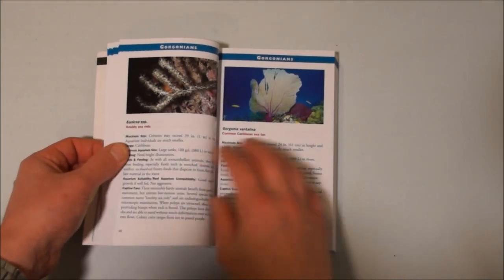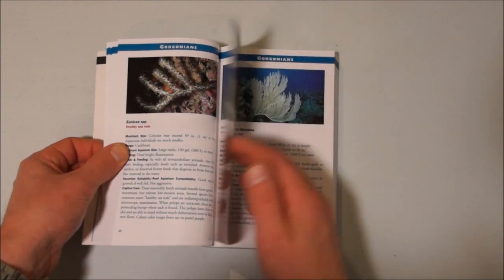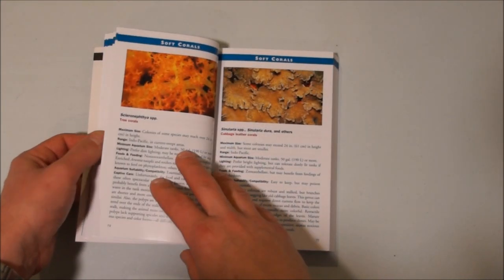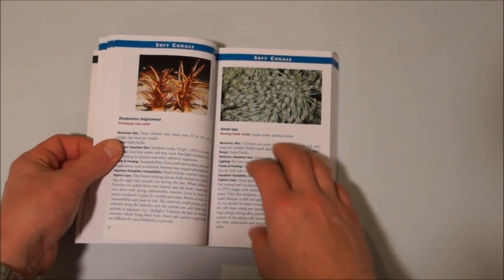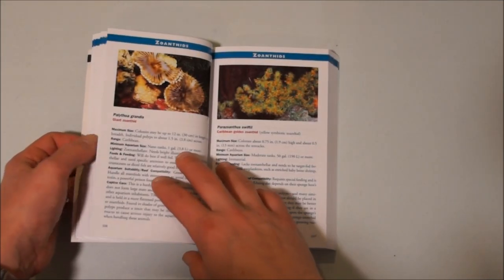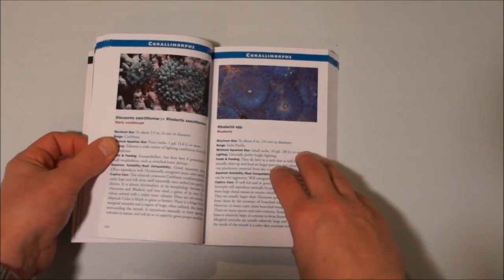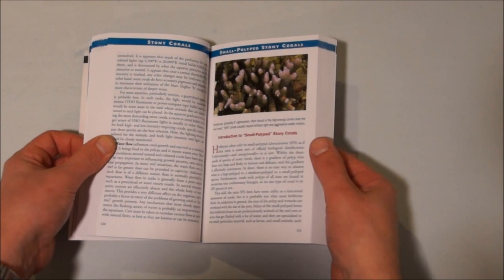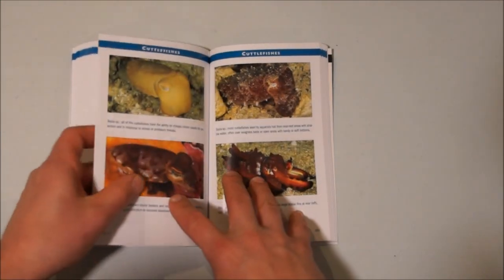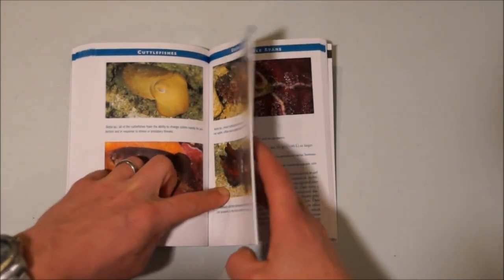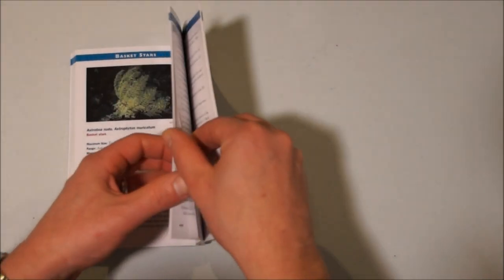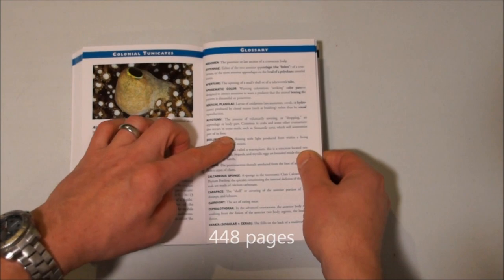It's one of these books that kind of does a little chapter summary on each of the families and then it goes into the specifics of each of the types. High gloss pictures, good resolution. Each thing tells you the common name, the scientific name, its size, its range, its minimum aquarium, its lighting. It tells you a little bit about how to feed it and its captive care. I think there's about 500 different species in here.